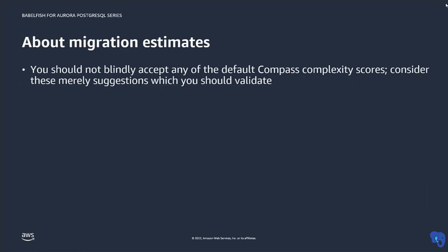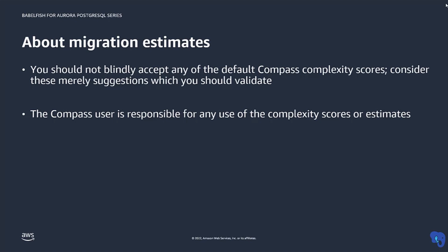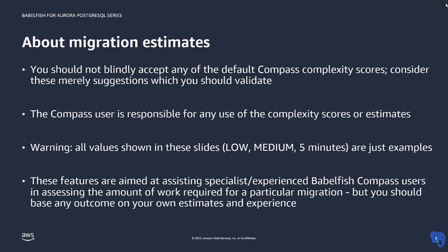Just a word of warning: the default Compass complexity scores should never be followed blindly. You should always interpret such values against the actual application at hand, as well as validate them against your own experience. Also, any values shown in this video are purely for demonstration purposes — please don't copy them. Please keep in mind that this is an advanced feature. It only makes sense to use this when you have a team with significant experience in Babelfish migrations and have collected enough data points from actual migration projects to quantify the complexity or effort for the remaining migration items.